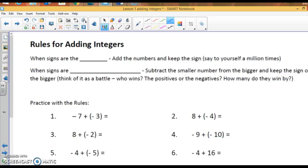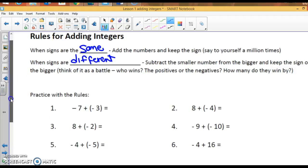Alright. Rules for adding integers. When the signs are the same, you add the numbers and keep the sign. When the signs are different, you subtract the smaller number from the bigger and keep the sign of the bigger. Pick the better in the battle. Who wins? The positives or negatives? And how many will they win by?